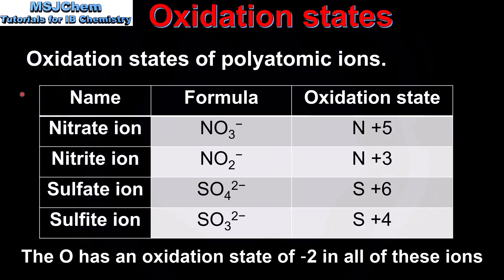Finally, we'll look at oxidation states of some polyatomic ions: the nitrate ion (NO3⁻), the nitrite ion (NO2⁻), the sulfate ion (SO4²⁻), and the sulfite ion (SO3²⁻). Nitrogen in nitrate has an oxidation state of plus 5, and in nitrite it is plus 3. Sulfur in sulfate is plus 6, and in sulfite it is plus 4.